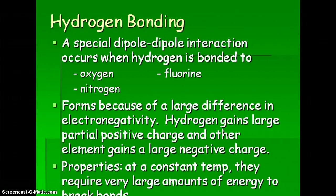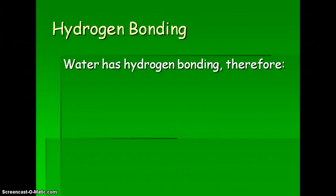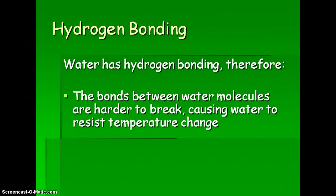At a constant temperature, hydrogen bonds require very large amounts of energy to break because of this strong force. Water has hydrogen bonding — hydrogen bonded to oxygen — which accounts for some of water's unique properties. This is why water molecules are very hard to break apart, causing water to resist temperature change. You may have noticed this near a lake in spring where it seems warm but ice remains — it takes a long time to get enough energy to break those water molecules apart and change the solid to a liquid.